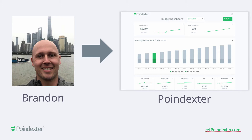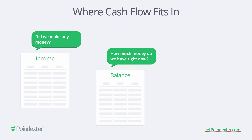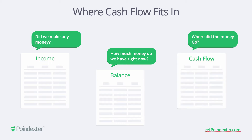Before we do that, we'll discuss exactly where the cash flow statement fits into the overall picture. Many of you may be familiar with the income statement, which tells us how much money we've made over some period of time. Then we have the balance sheet, which tells us how much money or assets we have at some point in time. And lastly we have our cash flow statement, which tells us where all the money went during some period of time. These are the three primary financial documents that most businesses deal with, and looking at these descriptions it seems as if the income statement and cash flow statement are pretty similar and almost redundant.